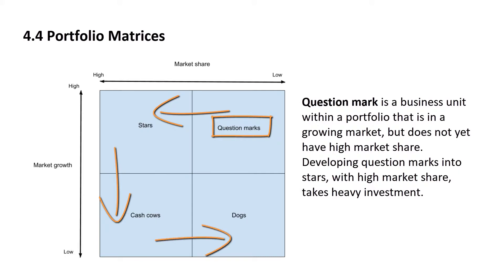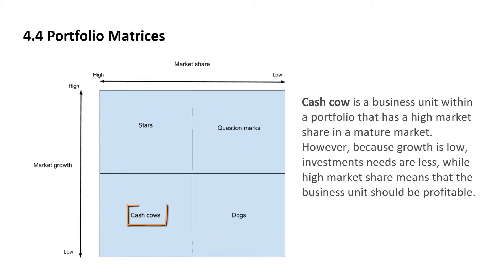I think you can see the pattern within our BCG matrix. Let's continue. Cash cow is a business unit within a portfolio that has a high market share in a mature market. However, because growth is low, investment needs are less, while high market share means that the business unit should be profitable.